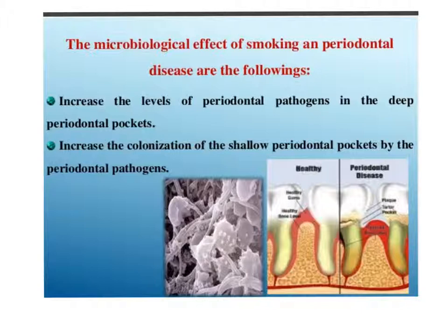The microbiological effects of smoking on periodontal disease include increased levels of periodontal pathogens in deep periodontal pockets and increased colonization of shallow pockets by periodontal pathogens. The proportion of subjects positive for Actinobacillus actinomycetemcomitans, P. gingivalis, and T. forsythia were higher among smokers. Smoking also enhances the increase of exogenous flora like Escherichia coli and Candida albicans, all reported in smokers.